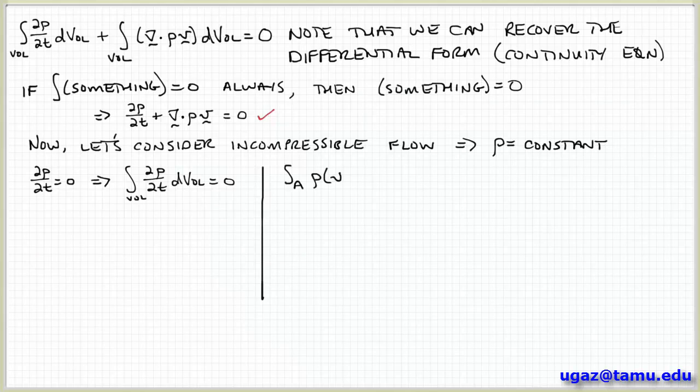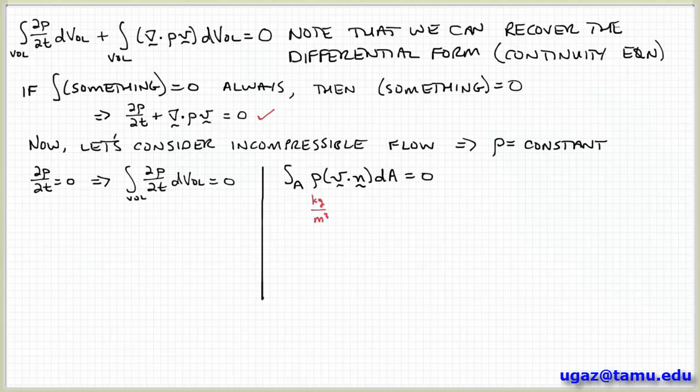So now let's look at the other term of the equation, the integral over the surface. So again, we're going back to the original form of the equation before we applied Gauss's theorem. So we have the integral over the surface area of rho v dot n dA, the mass flow per unit area. And let's look at the units associated with these terms. So density is mass per unit volume.